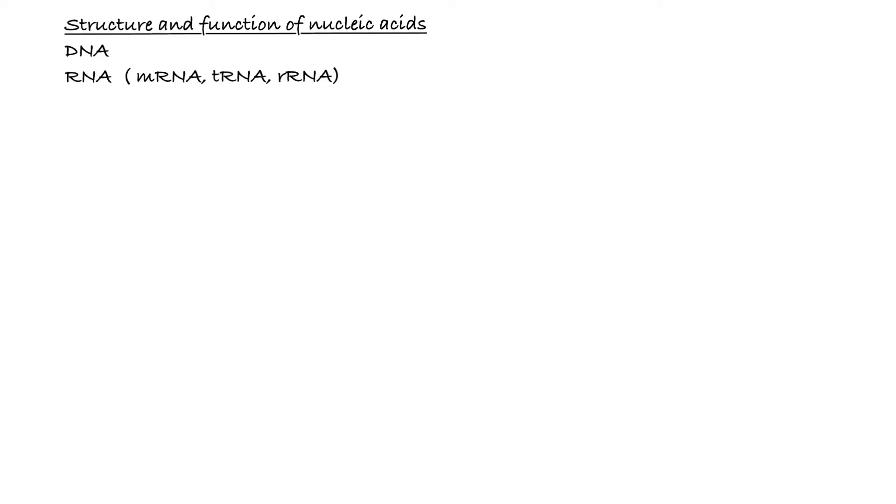It was actually only first isolated in 1869, which isn't that long ago. And then its role in hereditary, so passing on information from one generation to the next, was only confirmed in 1952. That is incredible. And it was in 1953 that Watson and Crick completed their model, which is now accepted as the first correct model of the double helix of DNA. And that image of the double helix is known by people across the world.